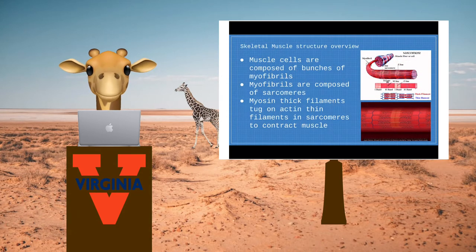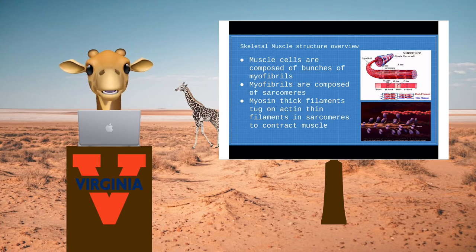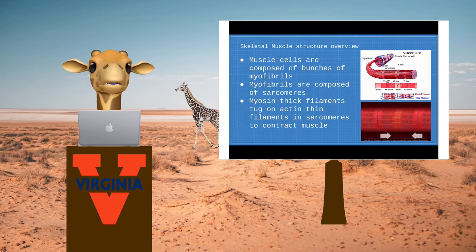Skeletal muscles are composed of tons of muscle cells that take the form of long fibers. These fibers are made up of bunches of myofibrils. Inside all the myofibrils, we find sarcomeres, which are what allow these muscles to perform their basic function, to contract and relax.